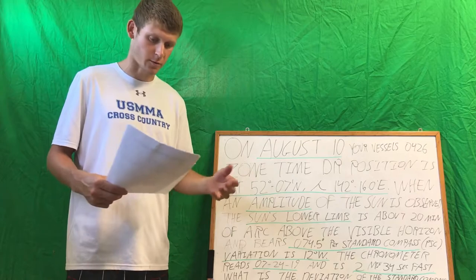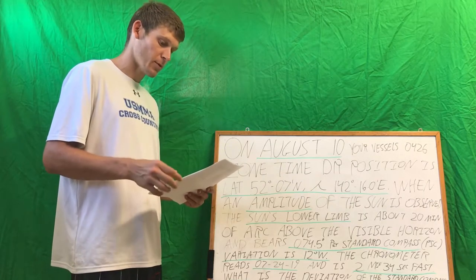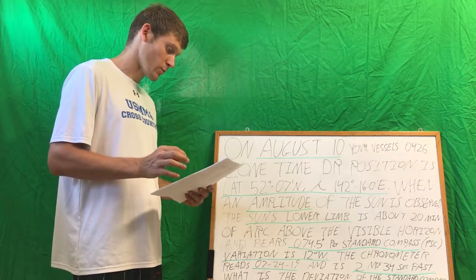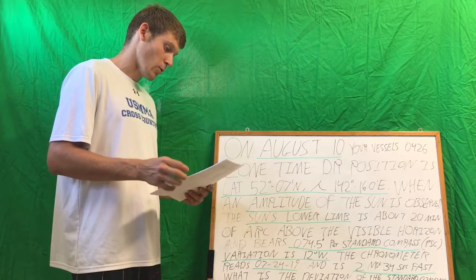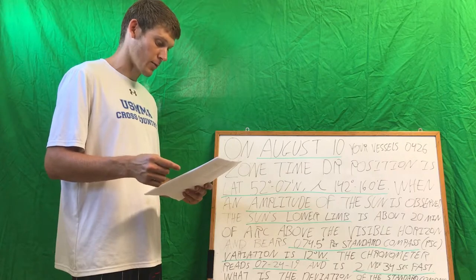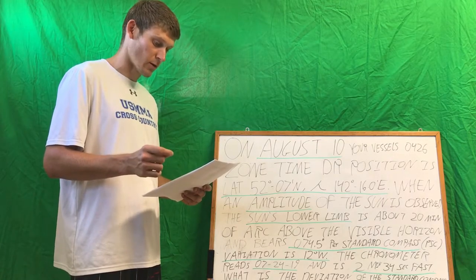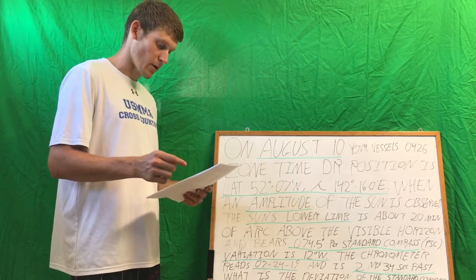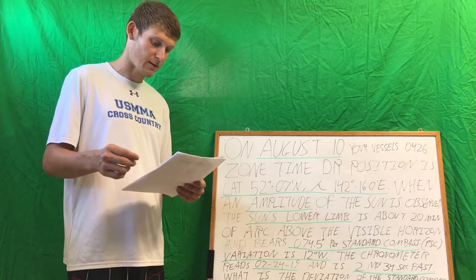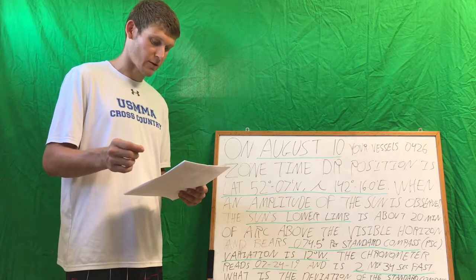An amplitude question is going to read as such. On August 10th, your vessel's 0426 zone time DR position is latitude 52 degrees 7 minutes north, longitude 142 degrees 16 minutes east. When an amplitude of the sun is observed, the sun's lower limb is about 20 minutes of arc above the visible horizon and bears 074.5 degrees per standard compass. Variation in the area is 12 degrees west. The chronometer reads 07 hours 24 minutes 19 seconds and is 2 minutes and 34 seconds fast. Which of the following is the deviation of the standard magnetic compass?